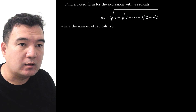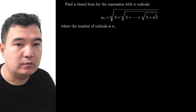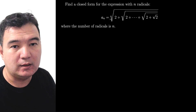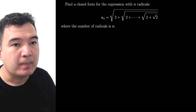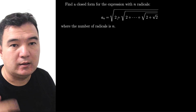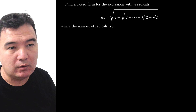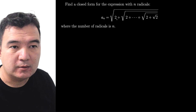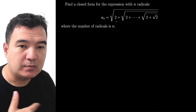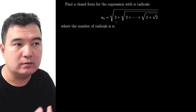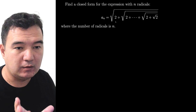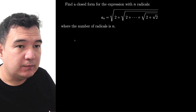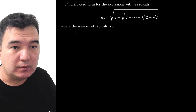We want to find the closed-form expression for this nested radical, meaning a simple single expression where you can plug in n and get the number, instead of computing n radicals again and again. For example, if I want to get a₁₀₀₀, I'd have to compute the radical 1000 times, which is not very efficient. So let's look at the first couple of terms.